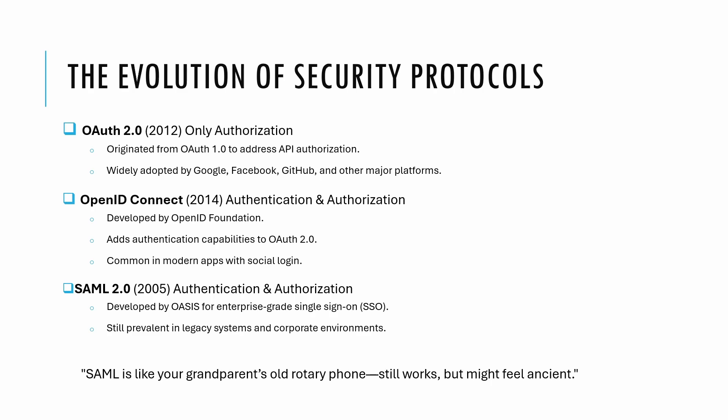OpenID Connect was built on top of OAuth 2.0. It was released in 2014 and was primarily created to fill a gap because OAuth 2.0 didn't handle user authentication. It's the backbone of social login features like using your Google or Facebook account to sign into a new app.